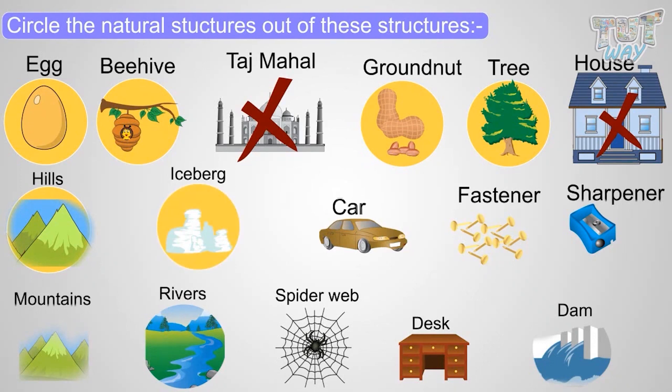Car, no, it's a man-made structure. Fastener, no. Sharpener, no. Mountain, yes, it's a natural structure. River, yes, it's a natural structure. Spider web, yes, it's a natural structure.